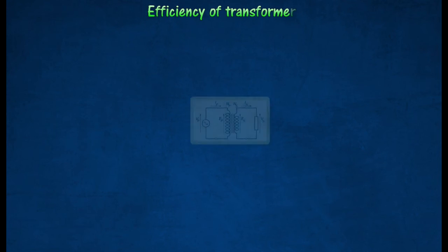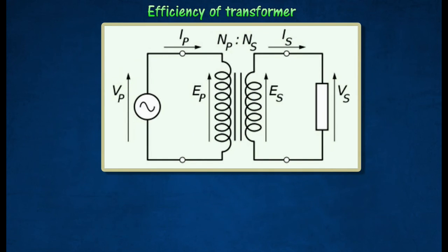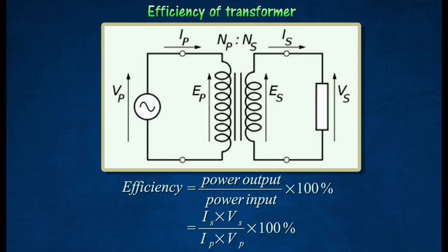Note that in reality, the assumption that transformers are 100% efficient is not a valid one. Some energy will be lost to the surroundings as heat from the iron core in the coils. The efficiency of a transformer can be calculated using the following equation.